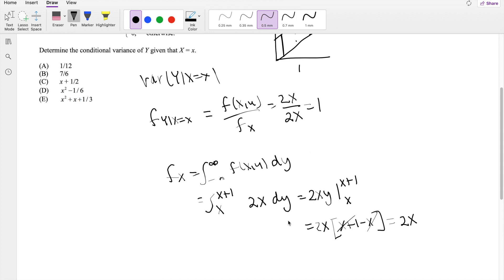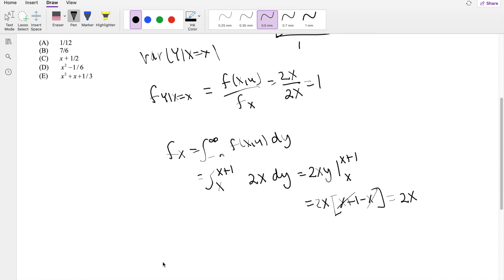All right, so then we need to find the variance. So we know the variance formula. If it's Y given X equals x, we know this is equal to E(Y² | X=x) minus [E(Y | X=x)]².